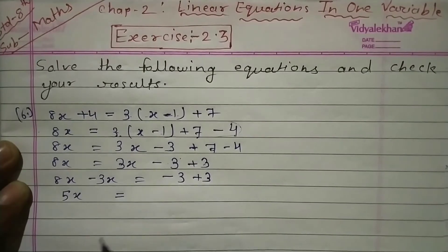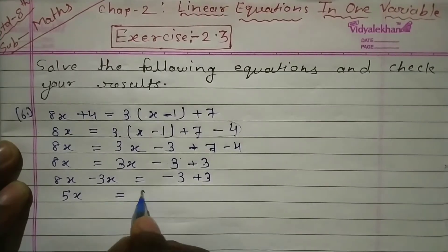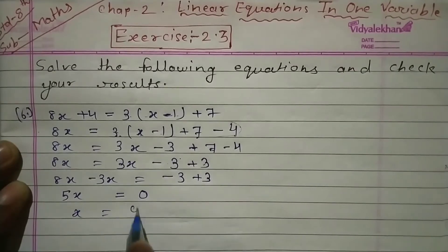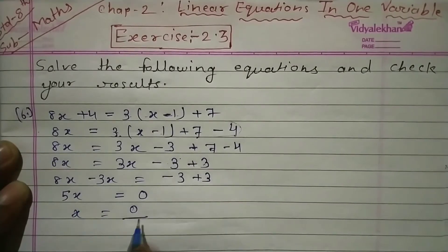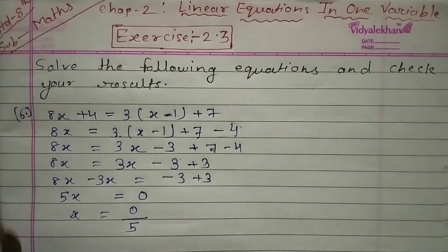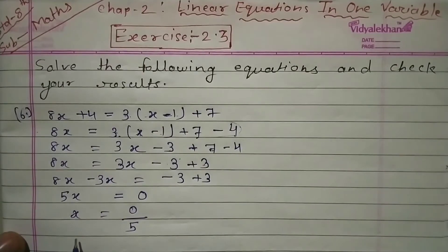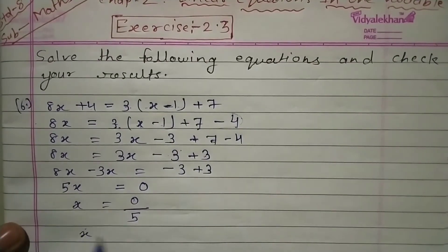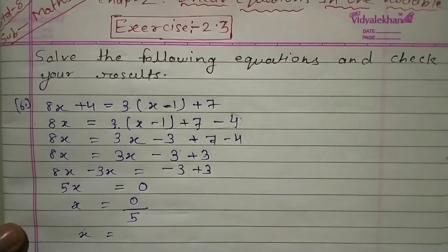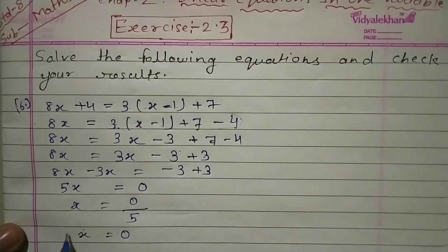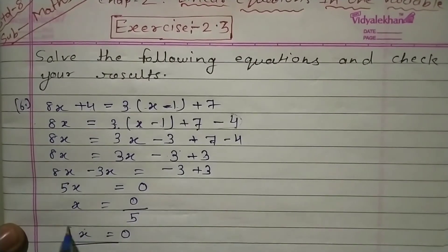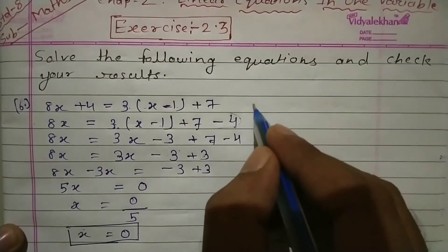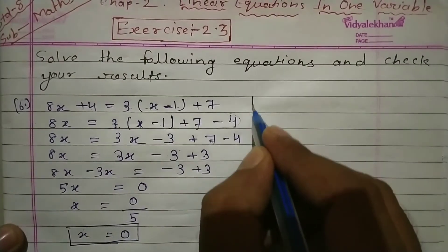5x = 0, तो x की value = 0 ÷ 5। किसी भी number को 0 से divide करो तो 0 ही आएगा। तो x की value आगई: x = 0। अब answer check करना है।